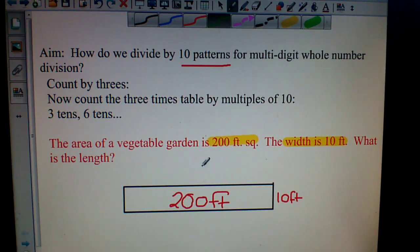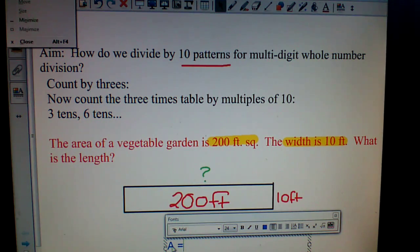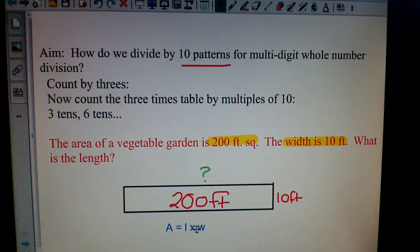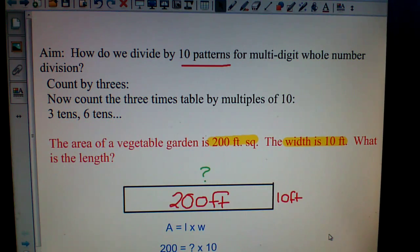So our big question mark is here: what's the length? So we know that the formula for area is area equals length times width. So if we put in our numbers, we would put in 200 equals we don't know times 10. Does that make sense to everybody so far? It should. So take a second and see if you could figure out what the question mark would be.